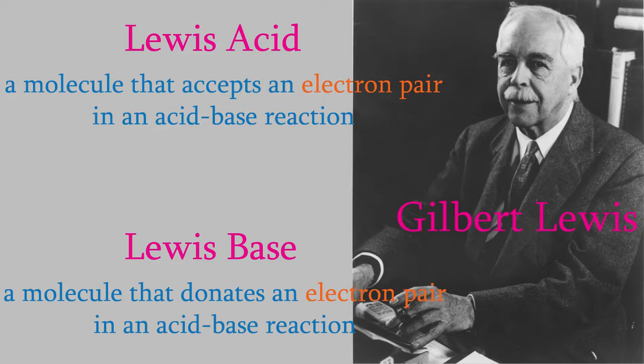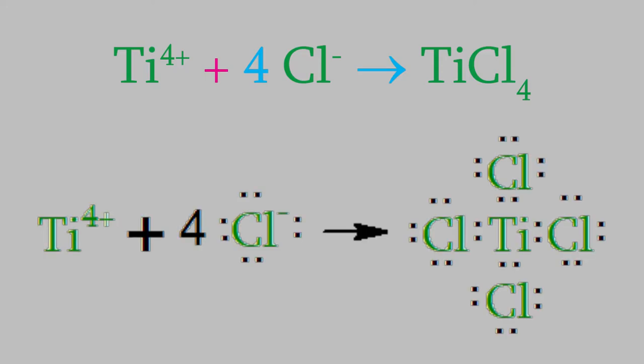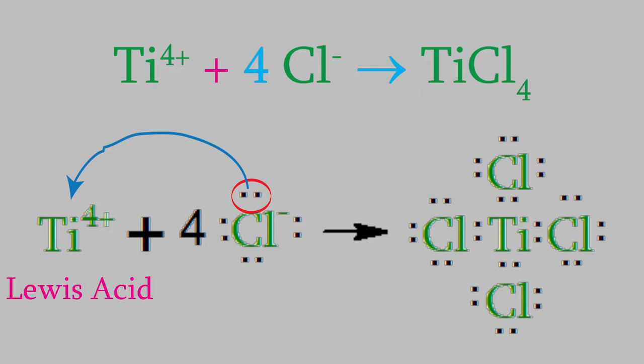For example, if we combine titanium-4 ions and chloride ions, we get this reaction. At first, this doesn't look like an acid-base reaction at all, but if we look at the Lewis dot structures, we can see what's really going on. The titanium ion starts out with no electrons in its valence shell, but it accepts electrons from the chloride ions. Since it accepts electron pairs, that makes the titanium ion a Lewis acid, and the chlorides are Lewis bases.